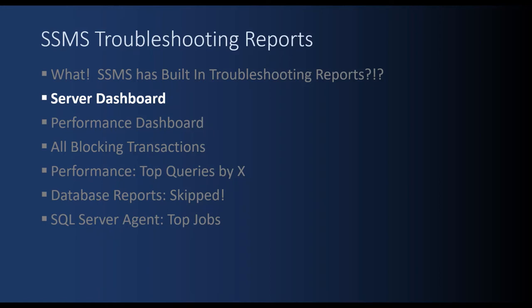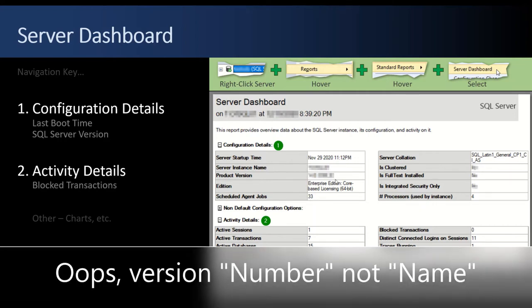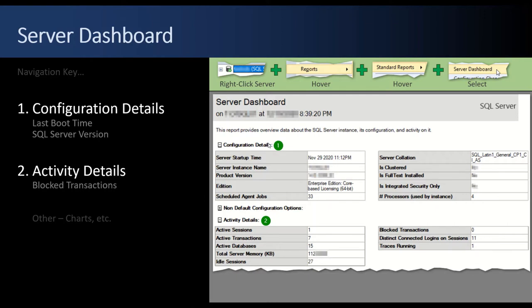The first SQL Server Management Studio troubleshooting report we're going to look at is the Server Dashboard — it's a level-set to see what's going on at a high level on the server. To get to it: right-click on the server, hover over Reports, hover over Standard Reports, and click Server Dashboard. I use it for configuration details — to determine when the server was last rebooted, what the SQL Server version is, and some other metrics under configuration details. There's also an activity details section where you can see how many active sessions there are, how many active databases, how many idle sessions are logged in, and some pie charts as well.